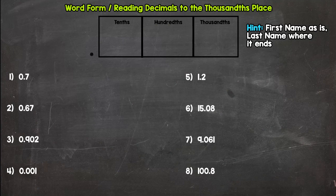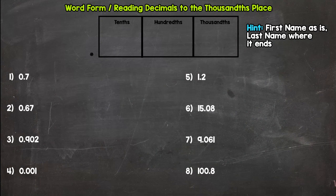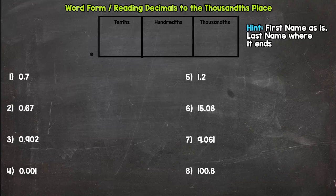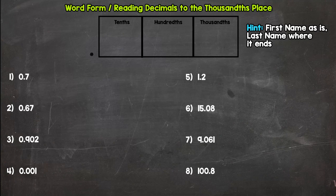Today we are going to work on reading and writing decimals to the thousandths place. Reading and writing decimals is a little different than whole numbers, so if you're looking to master whole numbers first, I would highly suggest that. Before you move on to decimals, make sure you have reading and writing whole numbers down. If you need help with that, I have a few videos — I'll post the links below in the description — and then you can come back to decimals.